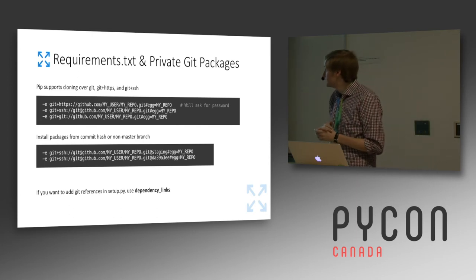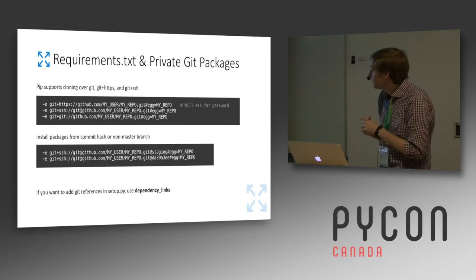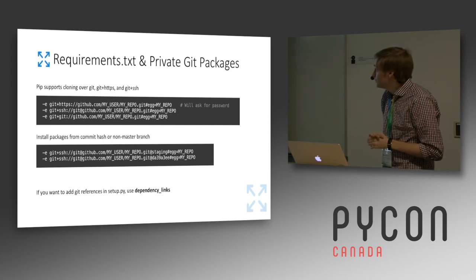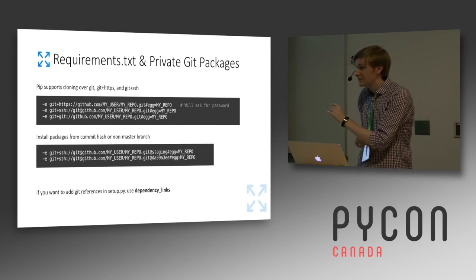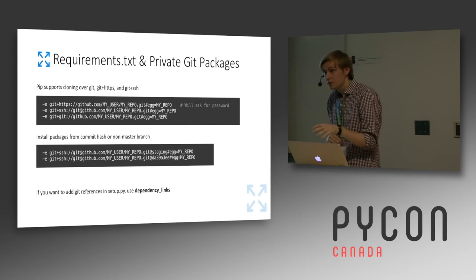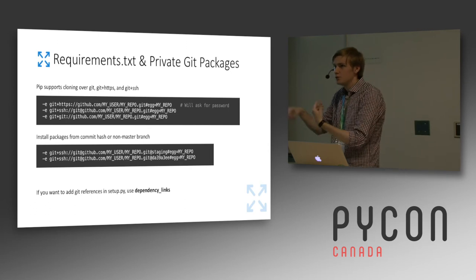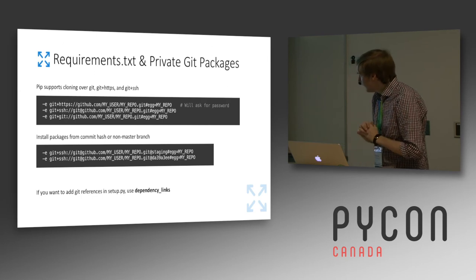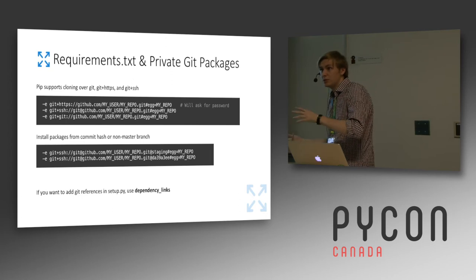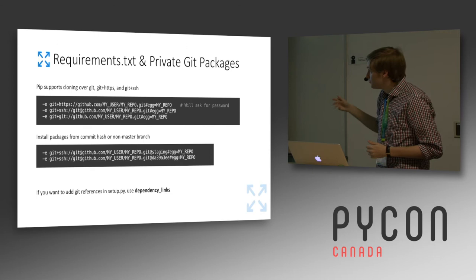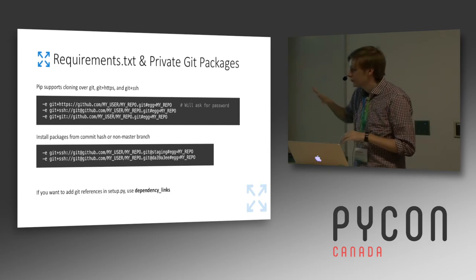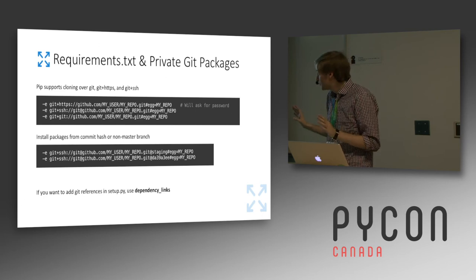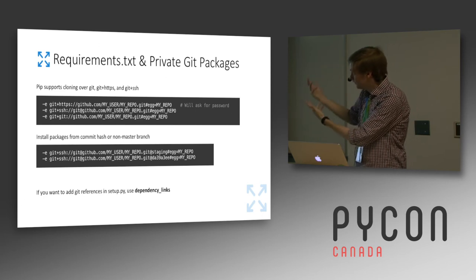Typically you can pull private repos over HTTPS, Git, or SSH. If you do it over HTTPS, it will commonly ask for a password unless you've auto-saved it. So if you're setting up requirements in a CI/CD environment, you'd typically want to use SSH because it uses your keys in a more automated fashion without hanging on a password request. You can also point not just to master, but to an alternative branch or even a specific commit. These principles are also relevant to setup.py via dependency links.